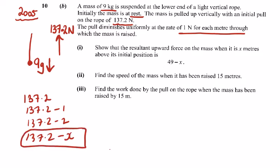We're asked to show that the resultant upward force on the mass when it is x meters above the initial position is 49 minus x. So if you look at the forces here, going upwards we have 137.2 minus x, and going down we have minus 9g.